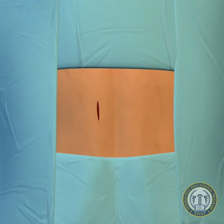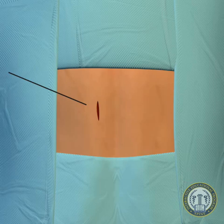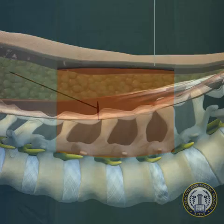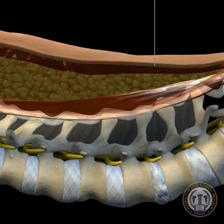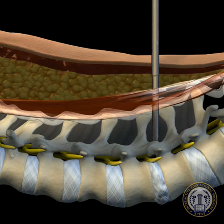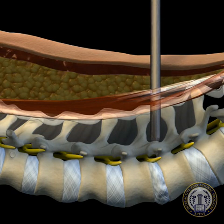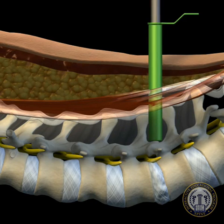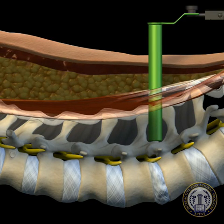A K-wire is directed using fluoroscopic guidance toward the facet complex with a lateral to medial trajectory. To minimize risk of neural injury, the wire is passed only through the fascia and muscle. Surgical dilators are then passed over the wire to develop a muscle-splitting surgical channel. A properly sized tubular retractor is then passed over the dilators and attached to the table frame via a flexible articulated frame.